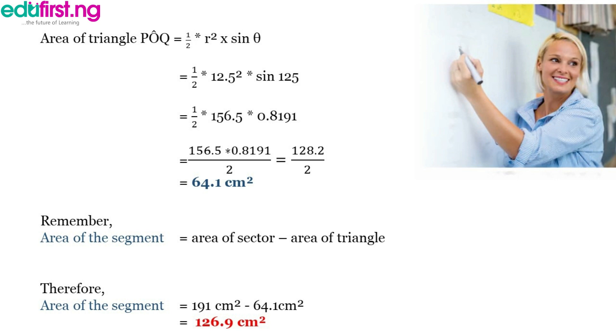So next we solve for the area of the triangle POQ. The area of the triangle is given as half r squared multiplied by sine theta. Same thing we did in the last slide we're going to do it here. Substitute the values of r and theta. Where we have r we put 12.5, and where we have theta we put 125. So if you do the math very carefully, sine theta is going to give us 0.8191, while 12.5 squared will give us 156.5, and multiply that through we're going to have area of triangle at 64.1 cm squared. Quite simple, right?